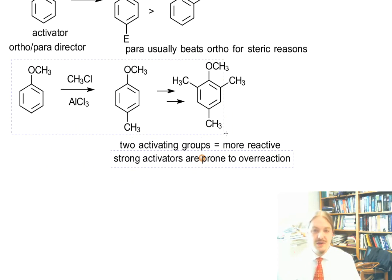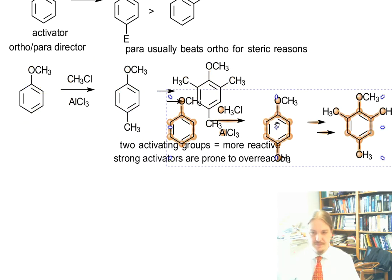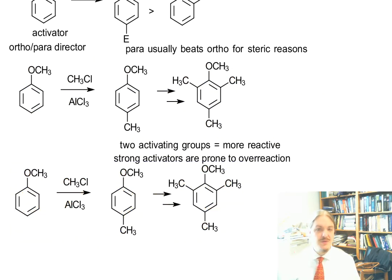If we switch out our reaction now for a halogenation reaction. Now, the halogens are electron withdrawing, so they are deactivated. So the product is less activated than the reactant. But still, the OCH3 group still dominates.